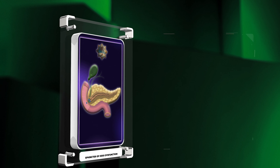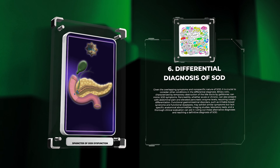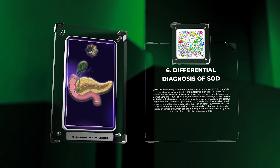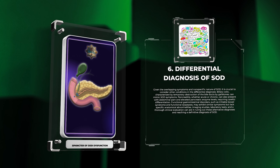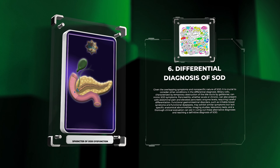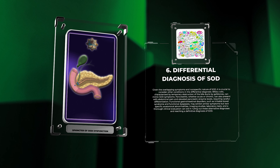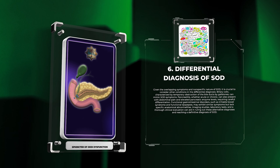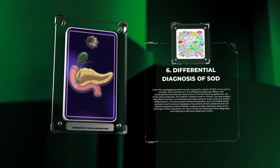Given the overlapping symptoms and nonspecific nature of SOD, it is crucial to consider other conditions in the differential diagnosis. Biliary colic, characterized by temporary obstruction of the bile ducts by gallstones, can mimic SOD symptoms. Pancreatitis, whether acute or chronic, can also present with abdominal pain and elevated pancreatic enzyme levels. Functional gastrointestinal disorders, such as irritable bowel syndrome and functional dyspepsia, may exhibit similar symptoms but lack specific anatomical abnormalities. Imaging studies, laboratory tests, and thorough clinical evaluation can aid in reaching a definitive diagnosis of SOD.